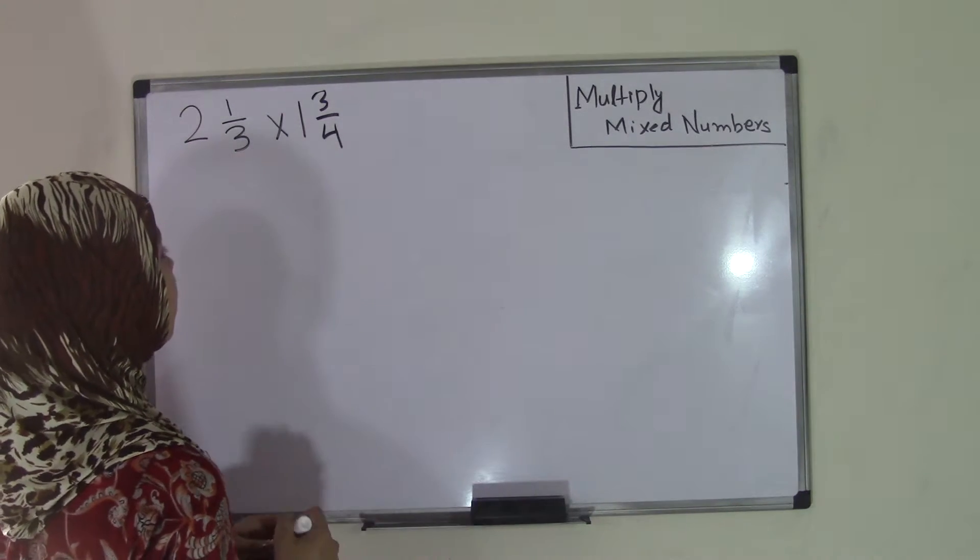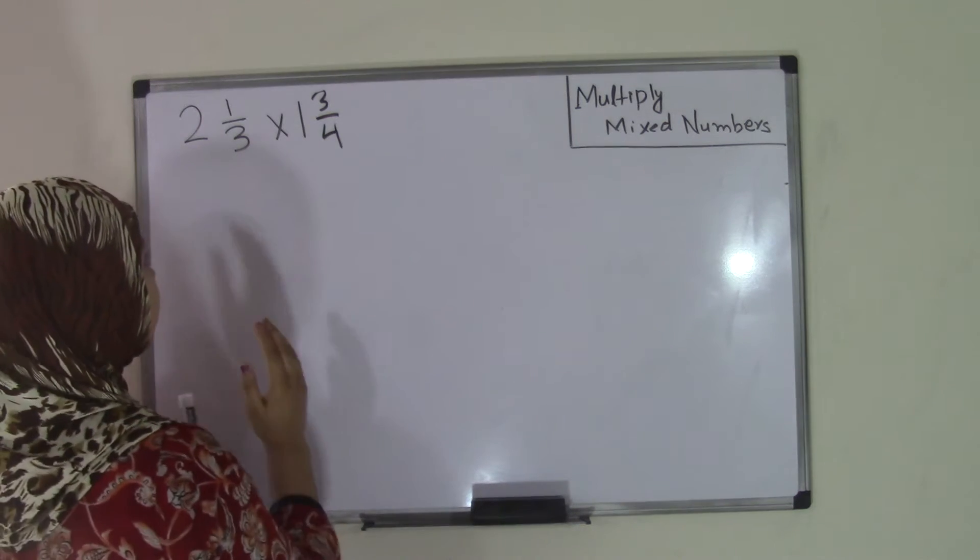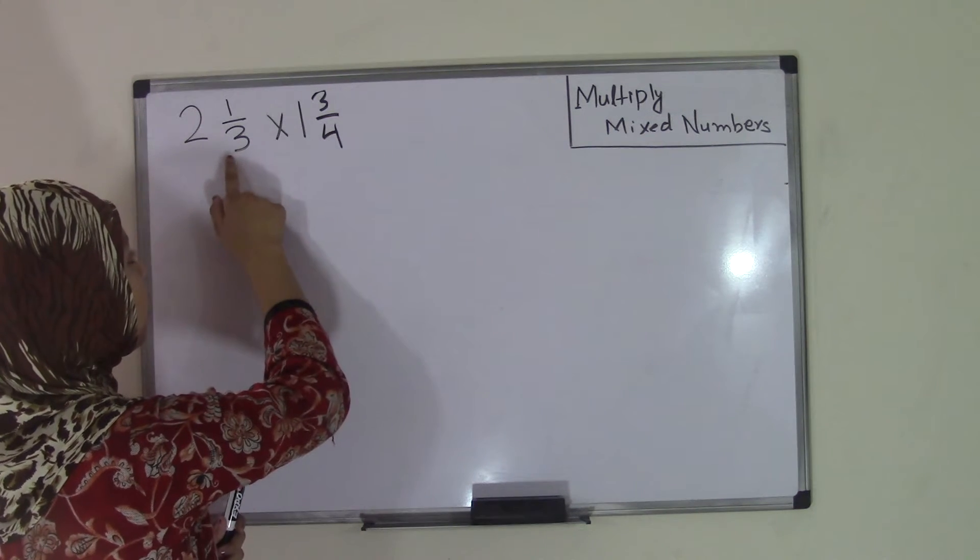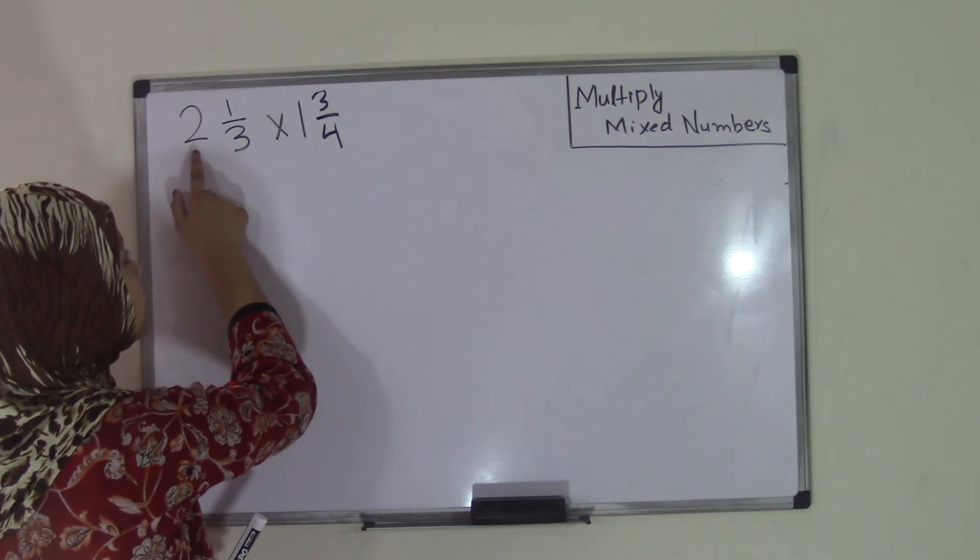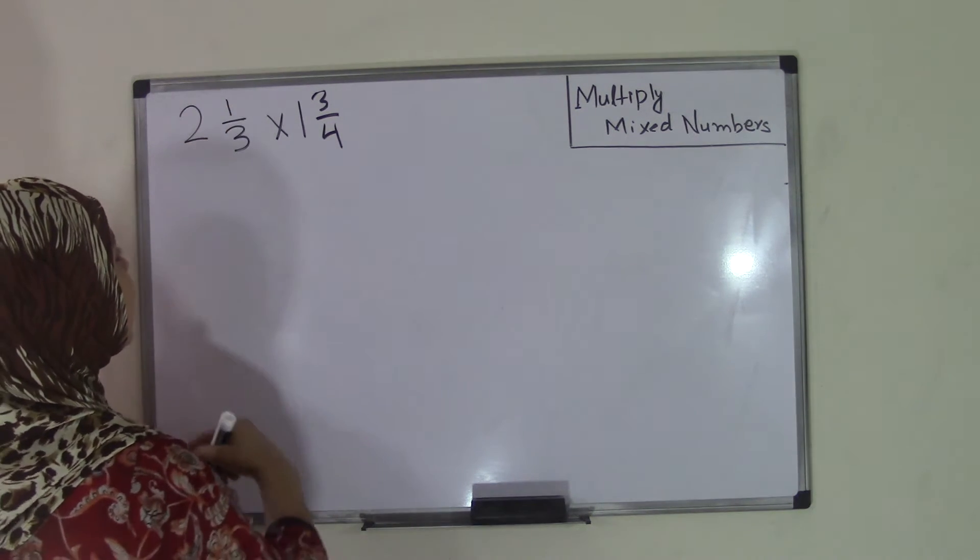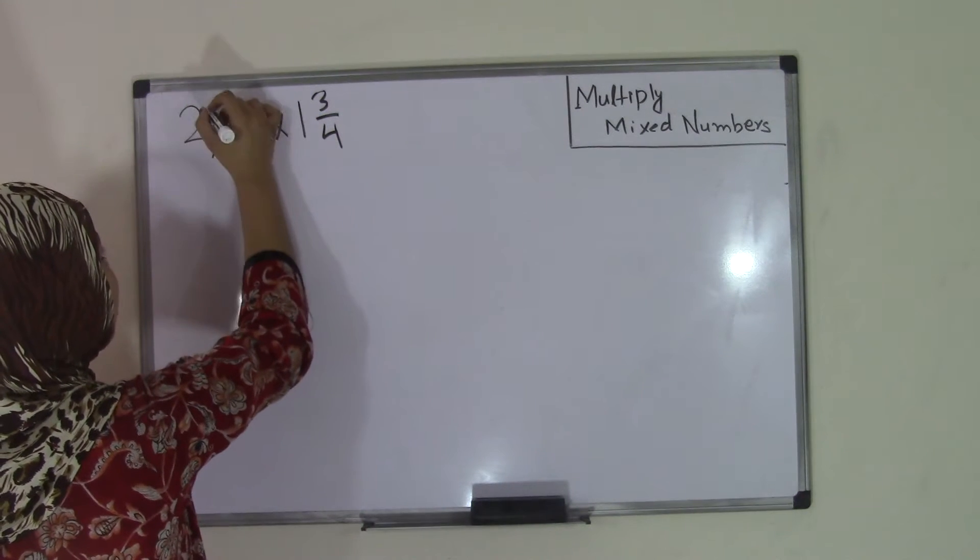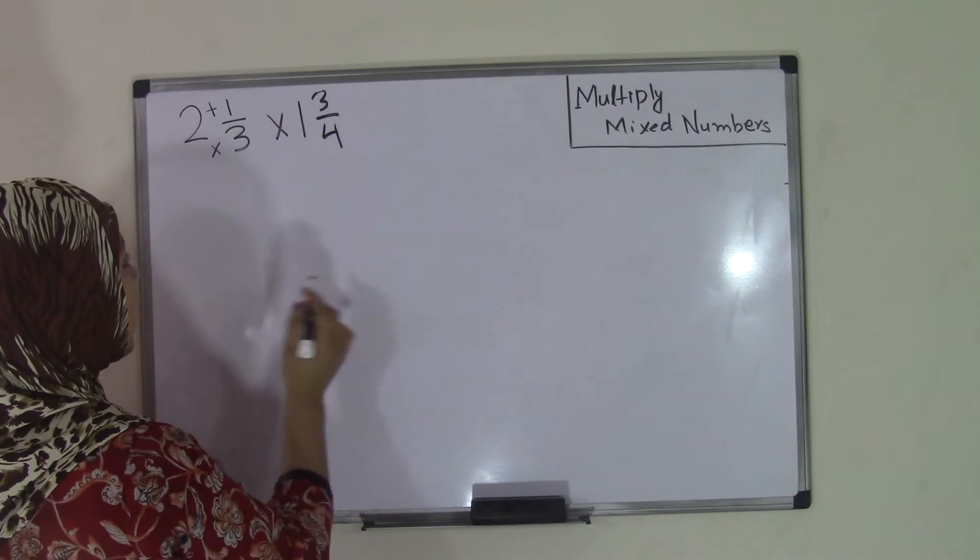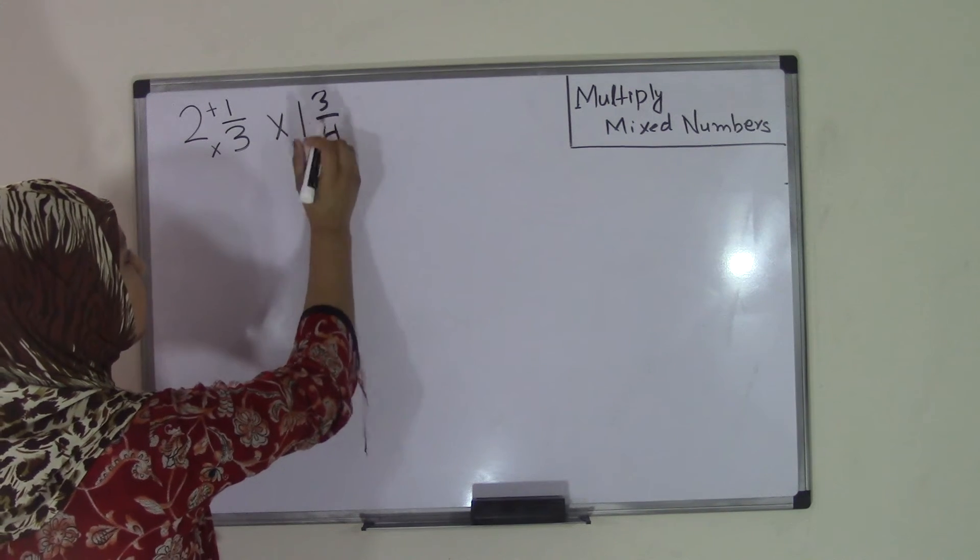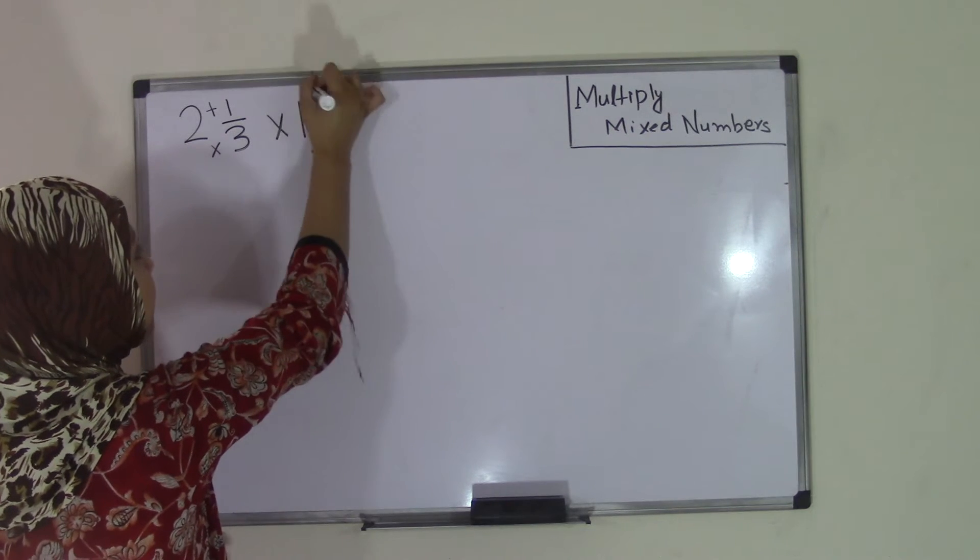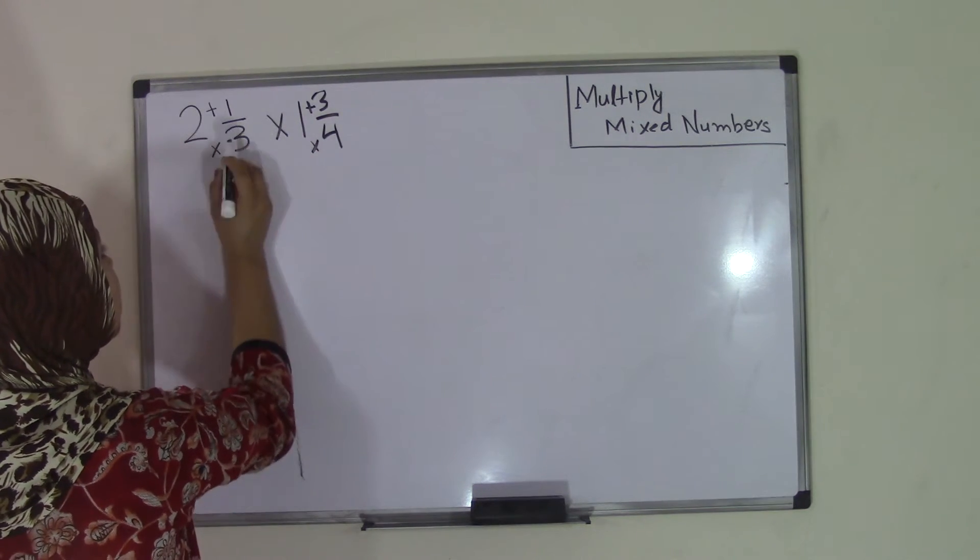Well, it's really simple. All you have to do is take your denominator, which in this case for our first mixed number, which is 2 and 1/3, 3 is our denominator, multiply that by your whole number, which is 2, and add it to your 1. So that means 3 times 2 and then plus 1. So we have to do the same thing for here. Multiply the denominator by the whole number, 4 times 1, plus the numerator, so plus 3.